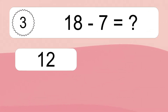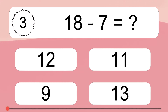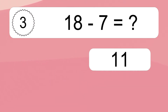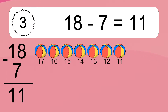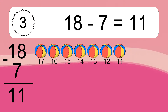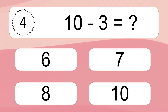18 minus 7 equals what? 18 minus 7 equals 11. Let's count it: 17, 16, 15, 14, 13, 12, 11.